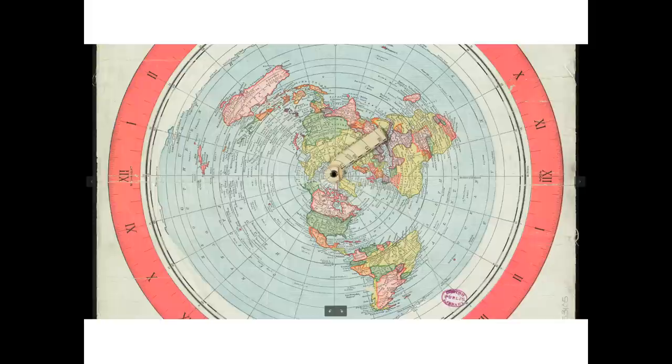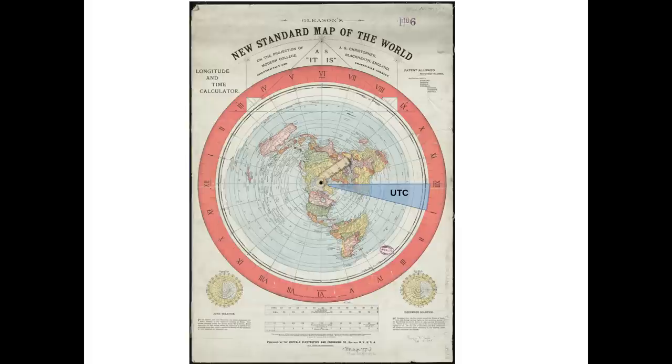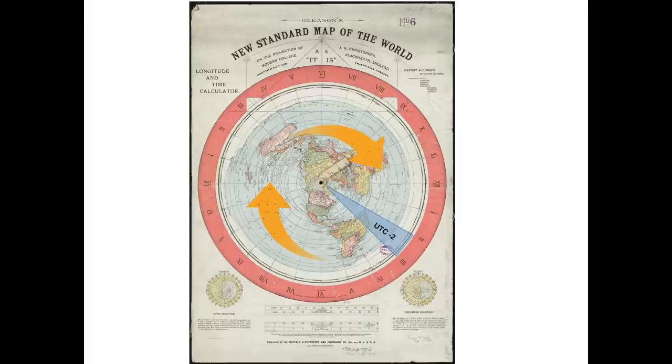Even the time zones make perfect sense on this map. So this is the representation of the time zones that they give us. Does this make any sense to you? Or does this make more sense? The hours on the clock are the different time zones. Everywhere you look on this map, everything we need to know about the world we live in is right in front of you.